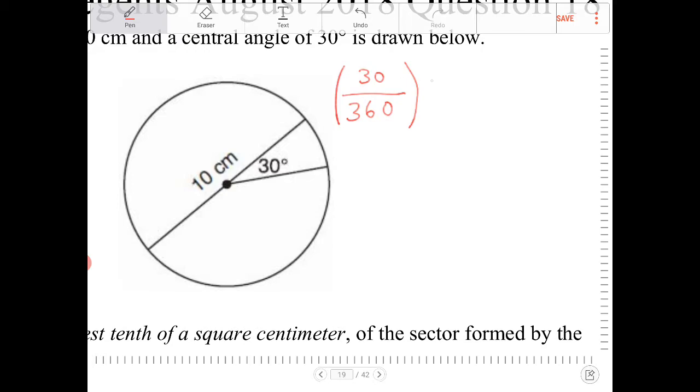So we're going to multiply this by pi times the radius squared. The radius in this case is going to be 5 because that's half of 10. And we can simplify this down to just 1/12th pi times 5 squared, which is equivalent to 25 pi over 12.